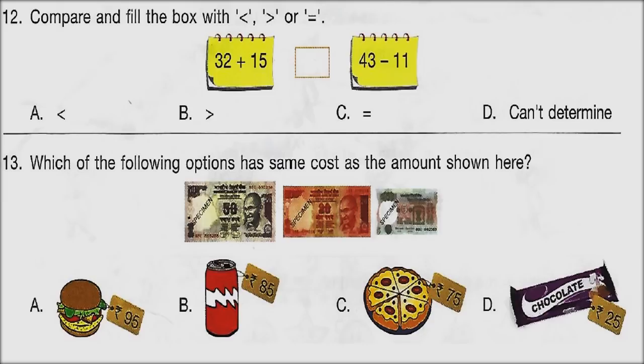Question 13: Which of the following options has the same cost as the amount shown? Some amount is given in the form of rupees 50, 20, and 5. Calculate the total amount and choose which item from options A, B, C, and D has the same cost.